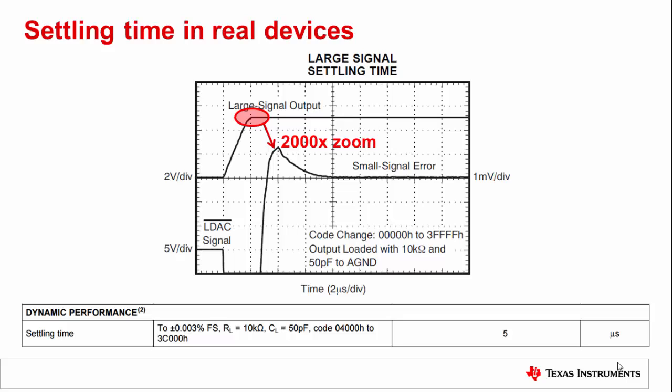Remember to pay attention to how the datasheet electrical characteristics table shows the settling time measurements being taken. In this case, the DAC9881 is shown to settle to 0.003% of full-scale range, with a specific load of 10 kΩ in parallel with 50 pF, and over a transition from code 0x0400 to 0x3C000. This is a large step size and is intended to be a worst-case figure. The settling time figure will look much better across smaller code transitions, as larger step sizes generally take longer to settle.